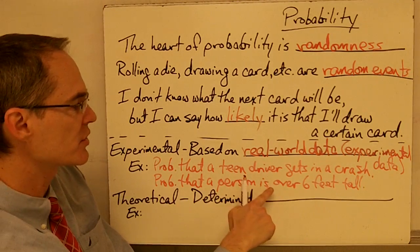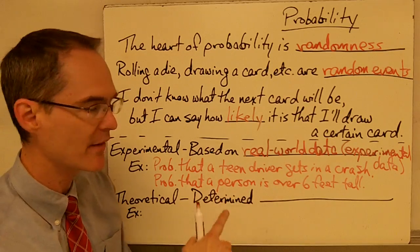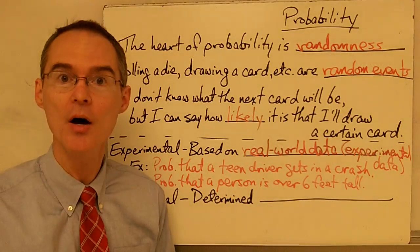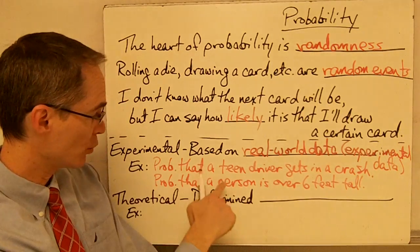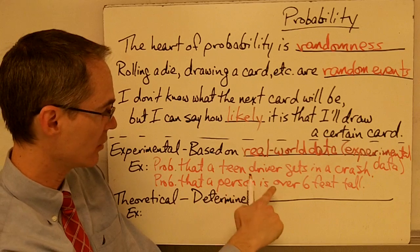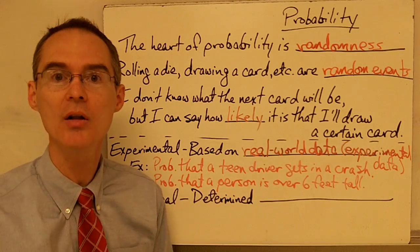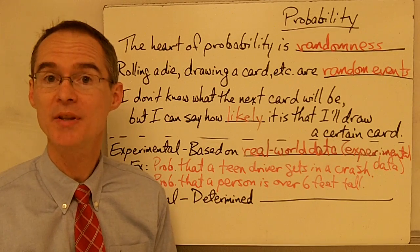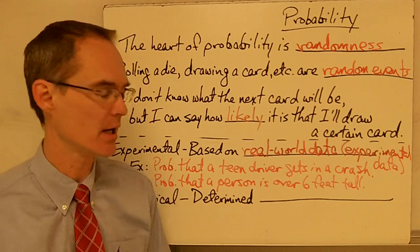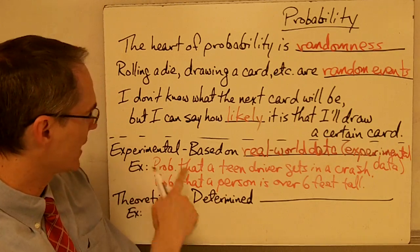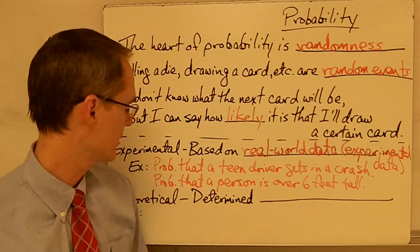Another example is the probability that a person is over six feet tall. We have a lot of data on different people's heights, and we could determine that probability just by using a bunch of data. So that's what experimental probability is.